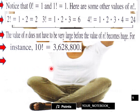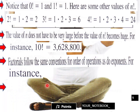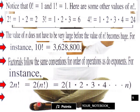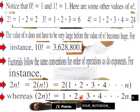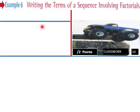Factorials follow the same conventions for order of operations as exponents. For instance, 2·n! equals 2 times n!, meaning 2 × 1 × 2 × 3 × ⋯ × n. Whereas (2n)! equals 1 × 2 × 3 × 4 × ⋯ × 2n — those are different expressions.